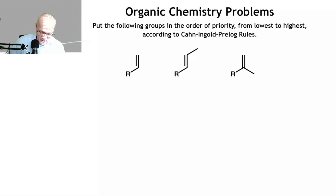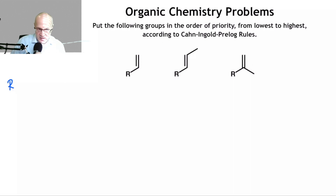So what Cahn, Ingold, and Prelog have said: start with the group that's attached to a chiral center. It has to be attached to a chiral center — or else why even bother doing this?